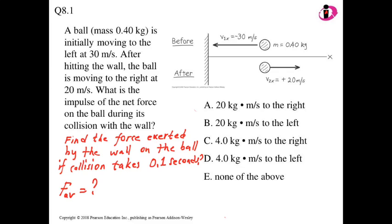A ball is thrown at a wall. Before hitting the wall it has a velocity of minus 30 m/s (going in the negative direction), the mass is 0.4 kg, and after hitting the wall it rebounds with a velocity of positive 20 m/s. The question is: what is the impulse of the net force on the ball during this collision? You don't need the collision time — just calculate the change in momentum.